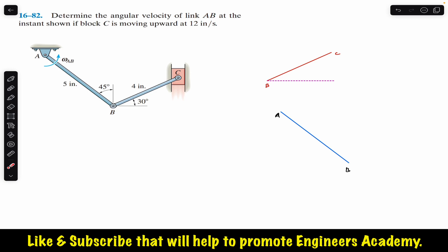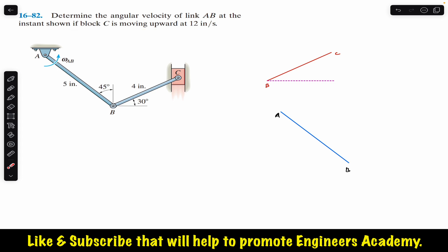Hello students, welcome to Engineers Academy. Do hit the subscribe button if you are here for the first time. We are going to solve a problem from Chapter 16 related to the instantaneous center of zero velocity. The problem says: determine the angular velocity of link AB at the instant shown if block C is moving upward at 12 inches per second. We are required to find omega AB.